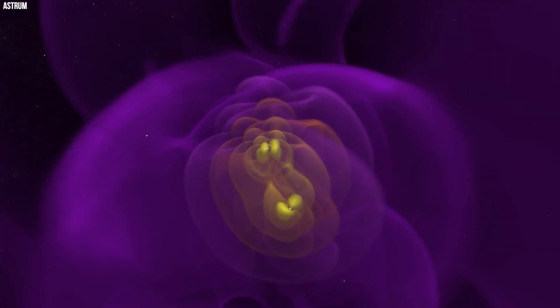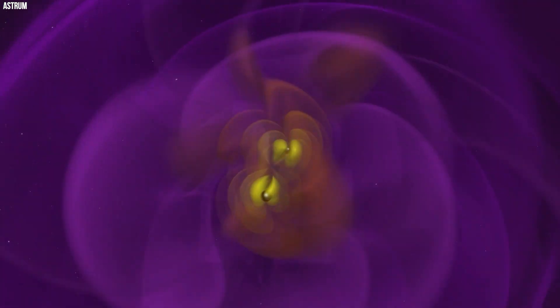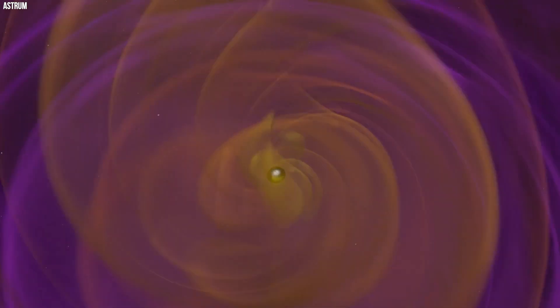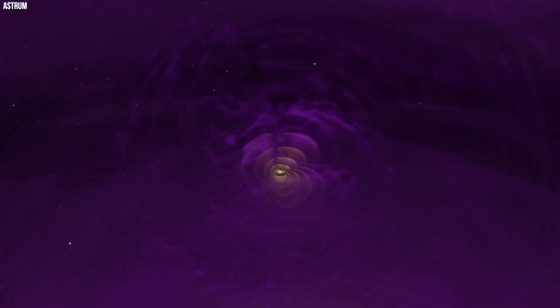NanoGrav, designed to perceive nanohertz frequencies, listens to gravitational waves with wavelengths on the scale of trillions of miles, extending across light years. According to NanoGrav, these nanohertz gravitational waves may exhibit periods of months, years, or even decades.